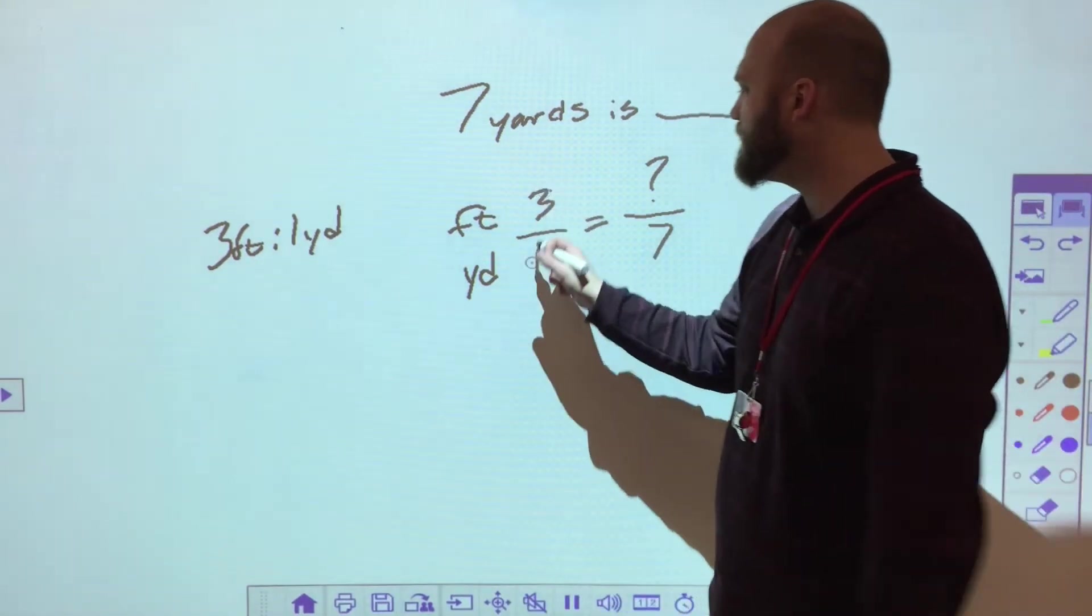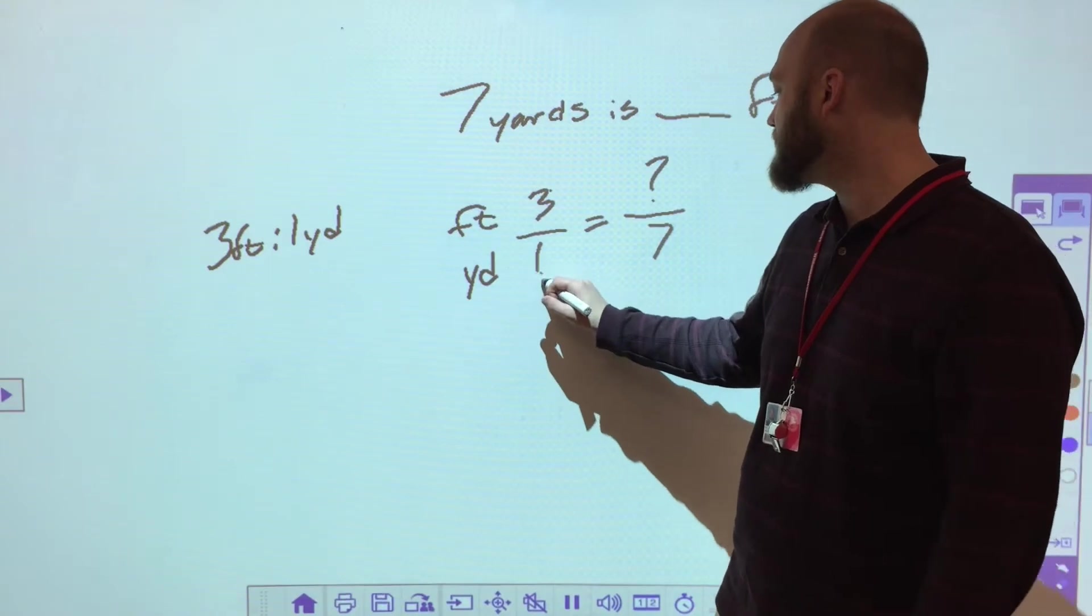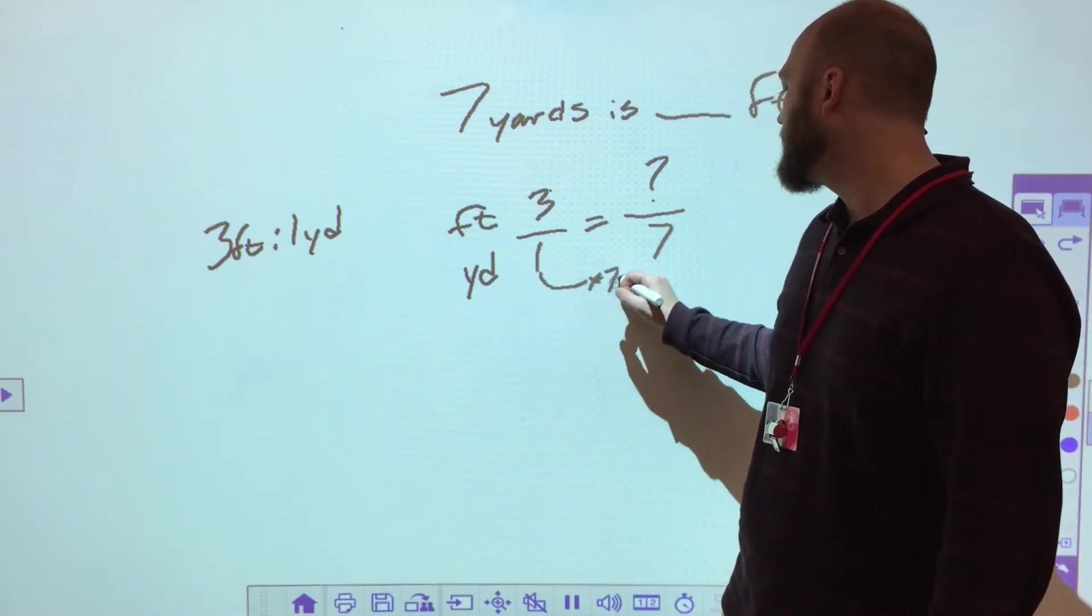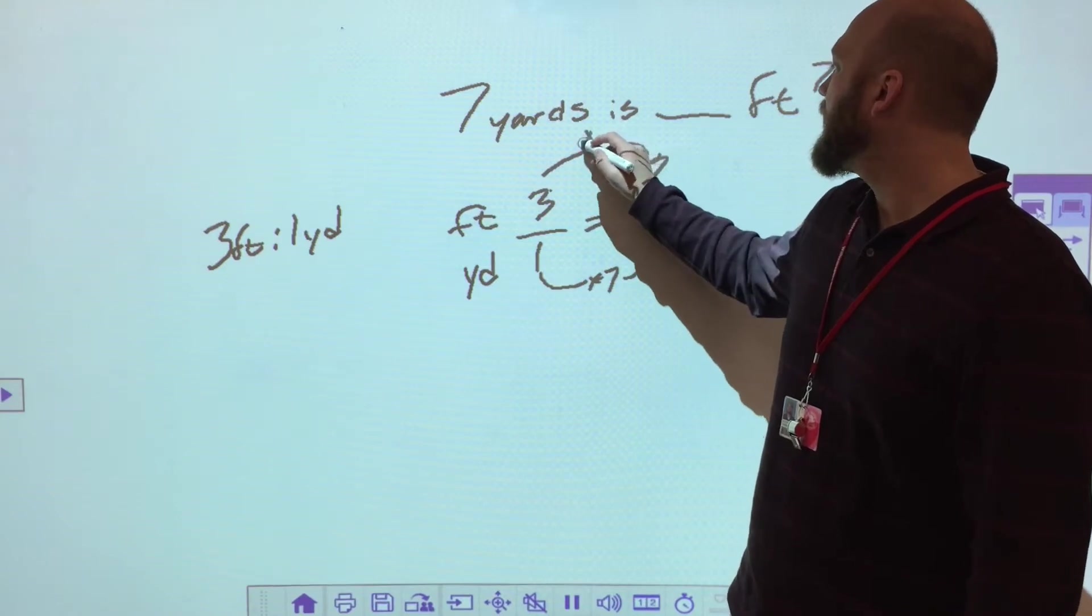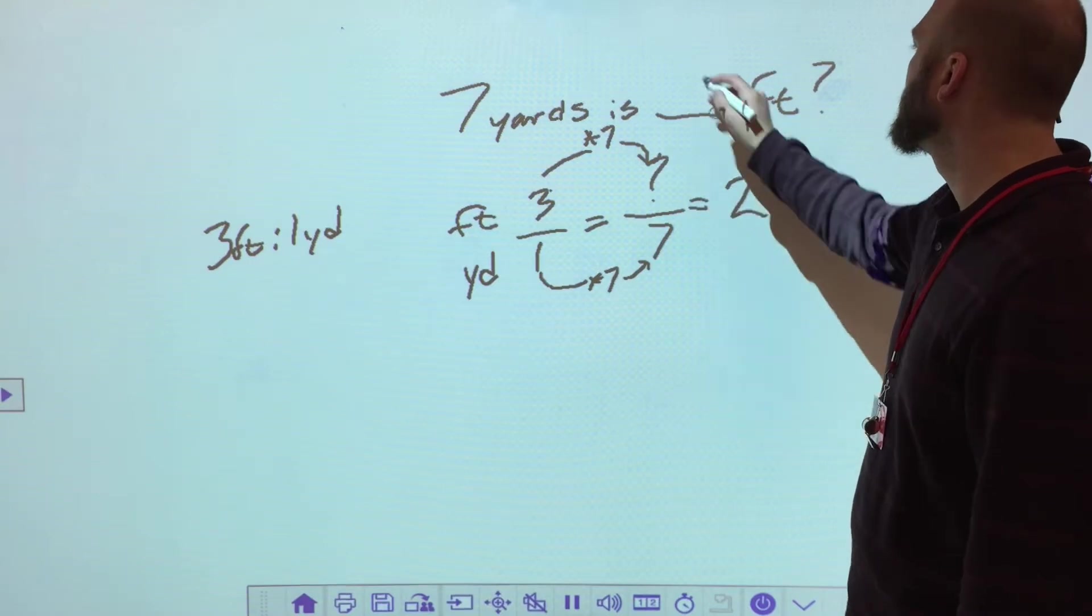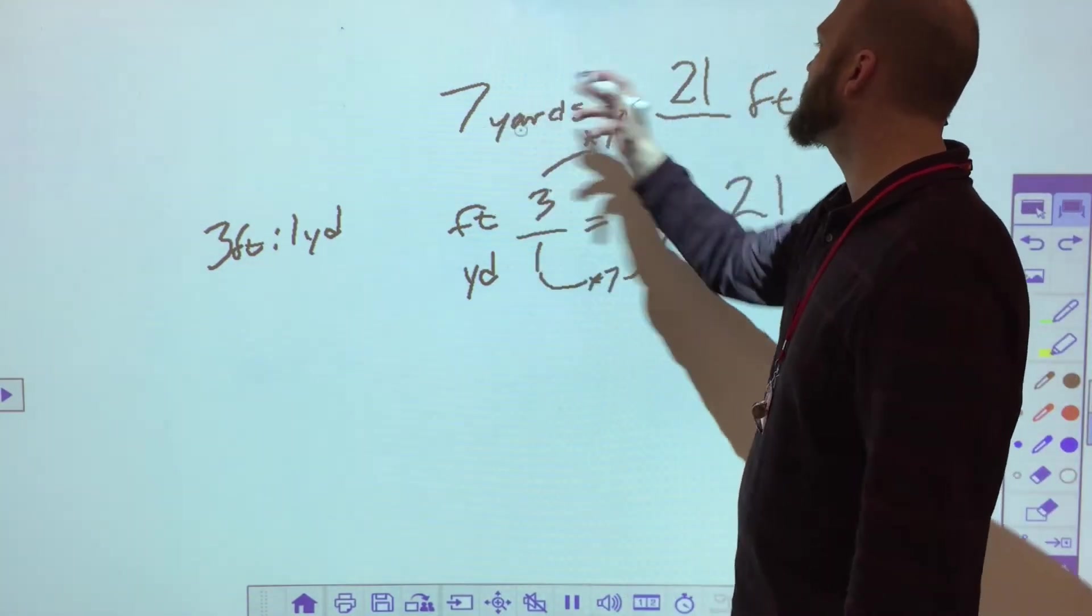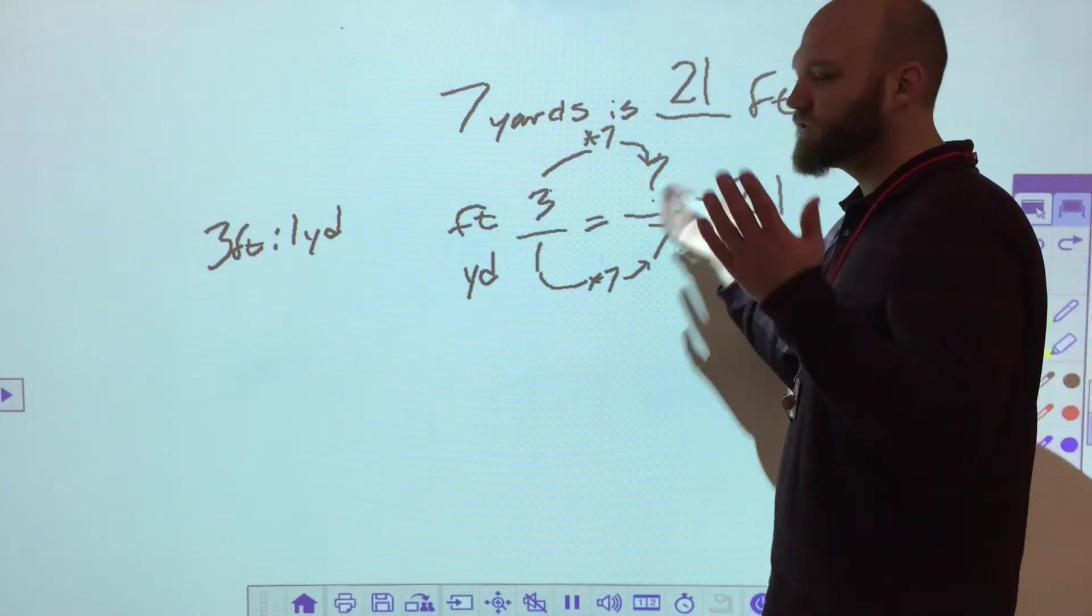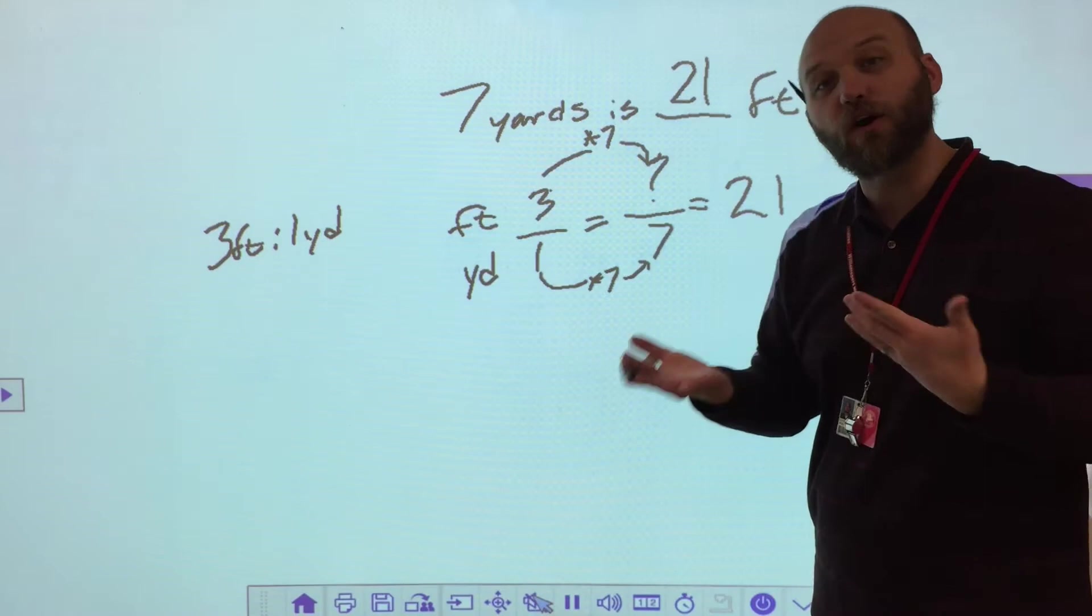So again, if I have three feet to one yard, how many feet to seven yards? How do I go from one to seven? I multiply by seven. And whatever I do to the bottom, I do to the top. What's three times seven? Twenty-one. And I might say to myself, alright well if I know there's three feet, can't I just take seven yards and then multiply them by three feet and I get twenty-one? Yes, I can. And that's pretty easy when I'm talking about yards and feet.